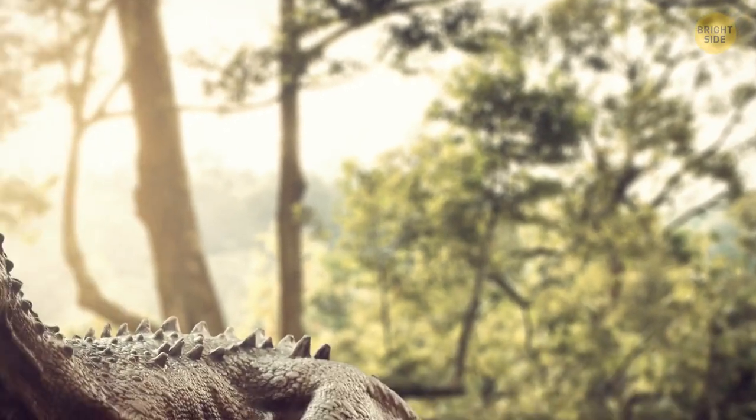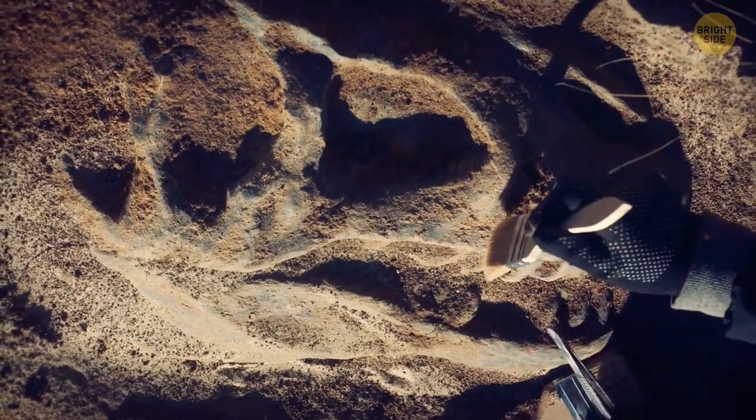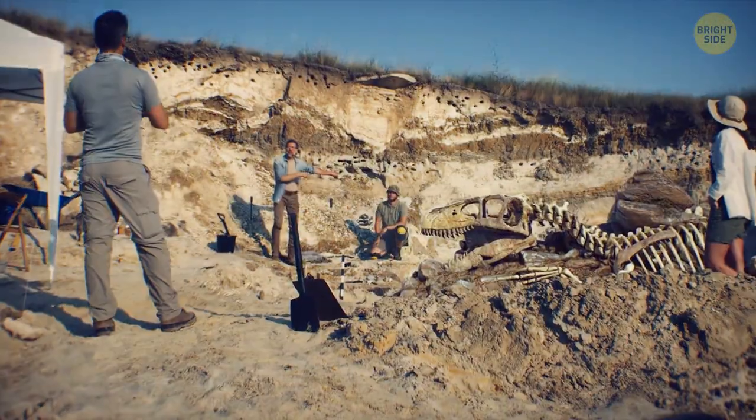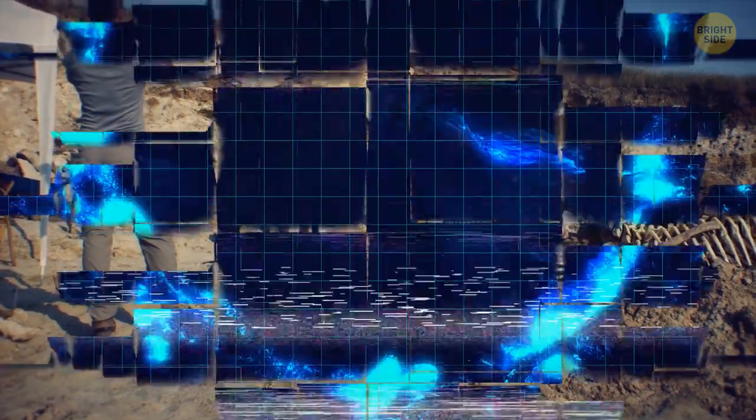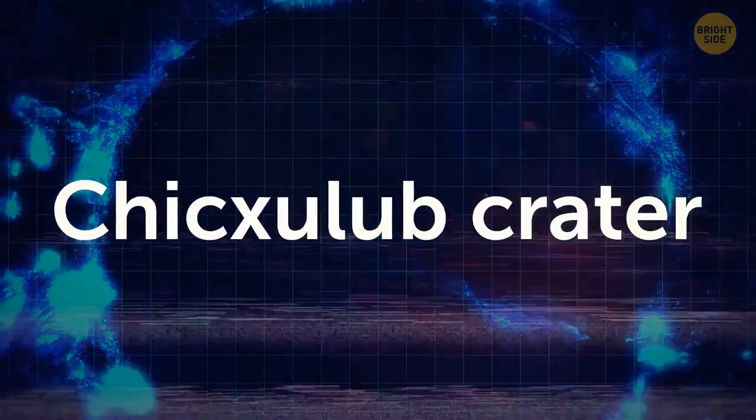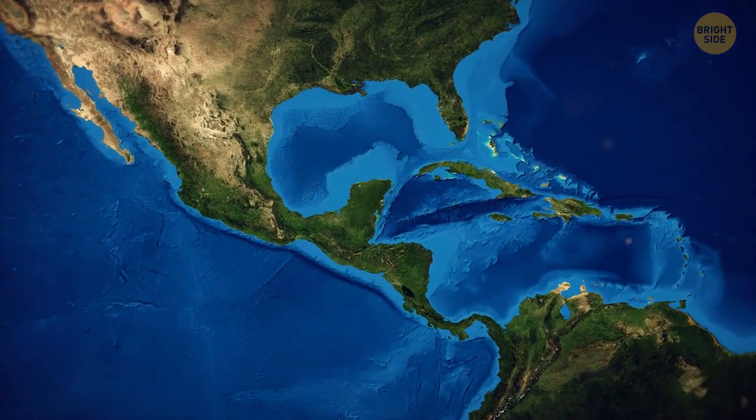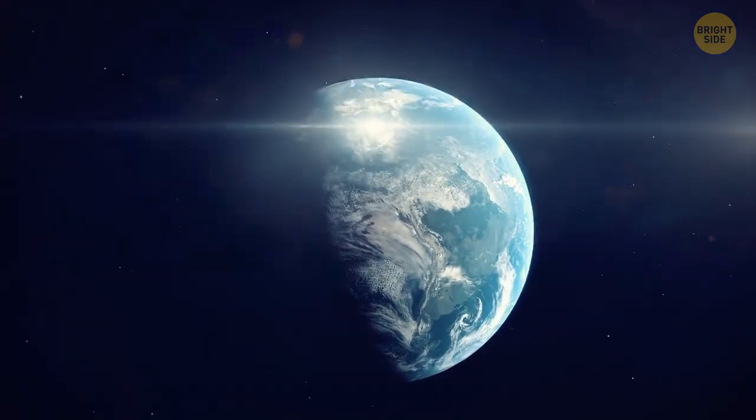Okay, remember dinosaurs? I don't. I wasn't around then. But they disappeared a long time ago. Yet how that happened was still up for debate within the scientific community for a very long time. Up until 1991, no less, the year the Chicxulub crater was discovered. That's a big hole located underneath the Yucatan Peninsula in Mexico. Many claim it was formed when a giant asteroid crashed on Earth.